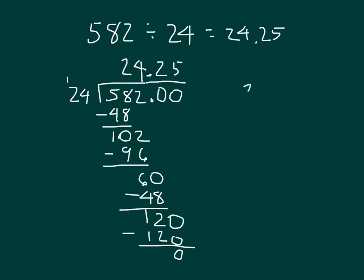Now if I had written it with a remainder, it would have been 24 with a remainder of 6. Now if I could divide that 6, that 6 was left over from the 582. If I could have divided that 6, I would have divided it by my divisor, which is 24.